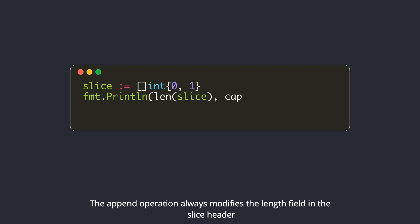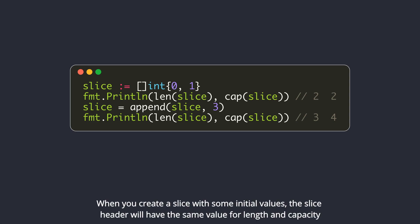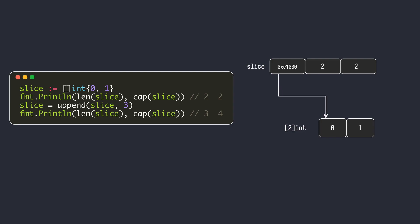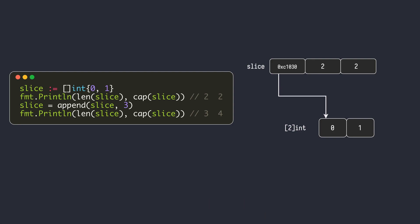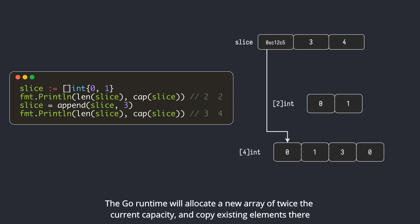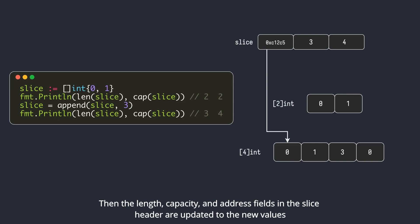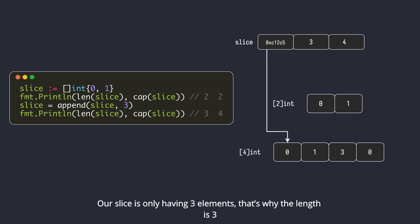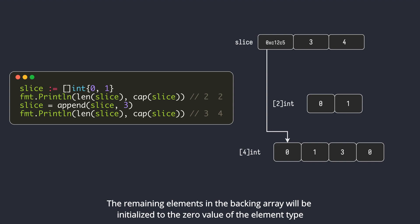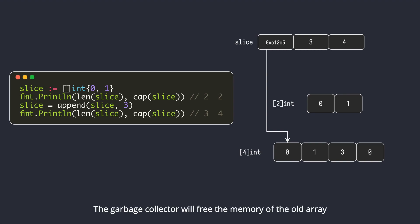The append operation always modifies the length field in the slice header, and may also modify the capacity and pointer fields. When you create a slice with some initial values, the slice header will have the same value for length and capacity. When you try to append a new element and there is not enough storage in the backing array, the Go runtime will allocate a new array of twice the current capacity and copy existing elements there. Then the length, capacity, and address fields in the slice header are updated to the new values. The remaining elements in the backing array will be initialized to the zero value of the element type. In Go, the append operation doubles capacity on each reallocation for the first few thousand elements, and then progresses at a rate of around 25% capacity growth. The garbage collector will free the memory of the old array.